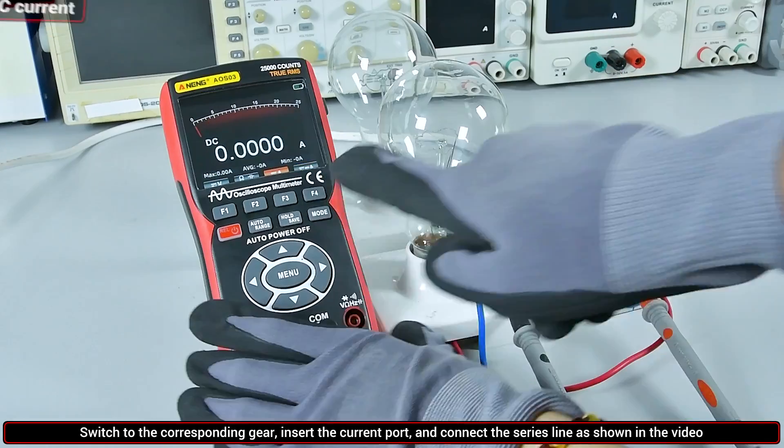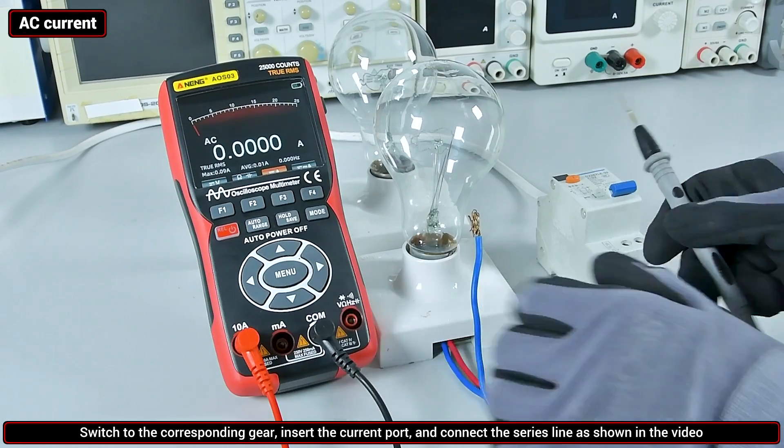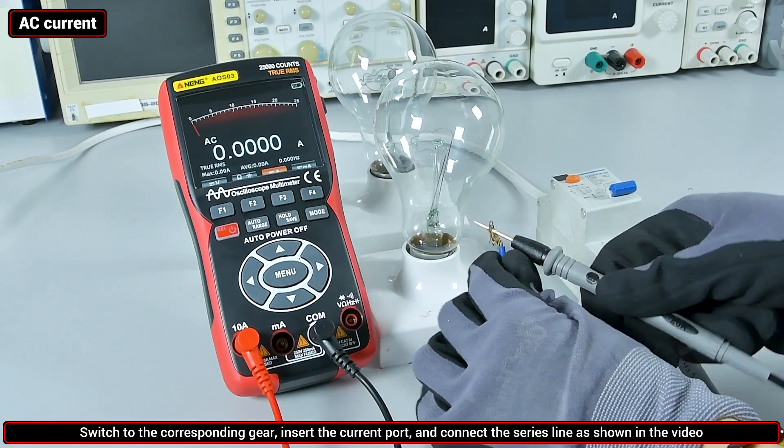AC current: plug the watch pen into the current port and measure it by connecting it in series as shown in the video.